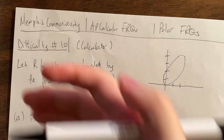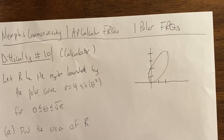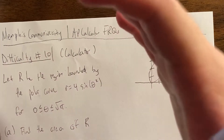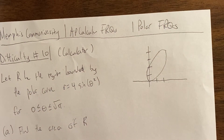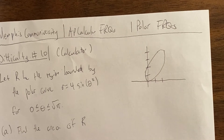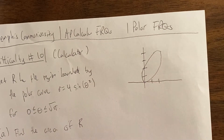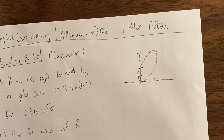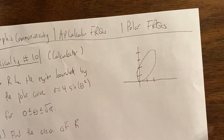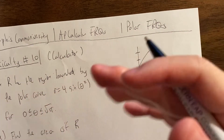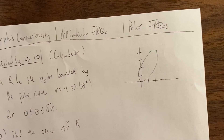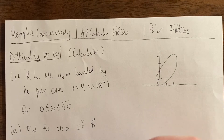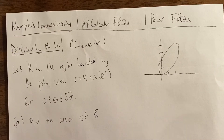Oftentimes polar is actually the hardest one and not Taylor series. For example, this last free response question, difficulty number 10, is based off a very recent free response question that appeared on the AP exam that was by far the lowest score on that exam. Not the Taylor series — it was this one right here. My students really did poorly on this one. What this question really involves is a knowledge of polar outside of calculus, really just understanding how polar works.